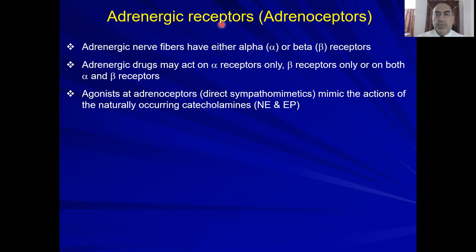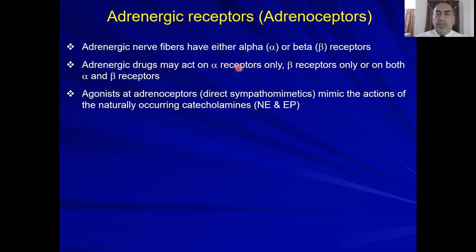As a reminder, in the sympathetic neuron we have a pre-ganglionic neuron that releases acetylcholine, which works on nicotinic receptors — ligand-gated ion channels causing sodium influx and action potential. In the postganglionic neuron, there is a release of norepinephrine which acts on alpha or beta receptors. Drugs that directly activate adrenergic receptors are called direct sympathomimetics; they mimic the action of the natural catecholamines norepinephrine and epinephrine.